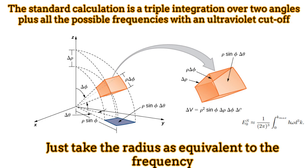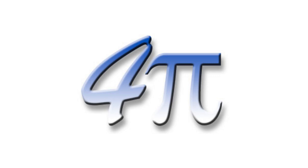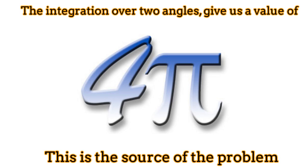If we are good observers, we could perceive that the calculation of the vacuum energy density corresponds to the triple integration over two angles plus the frequency. In the standard calculations, the integration over the two angles gives us the standard solid angle 4π.